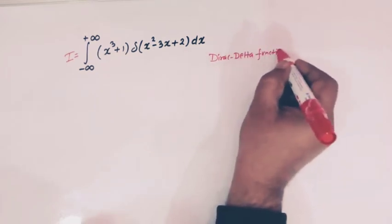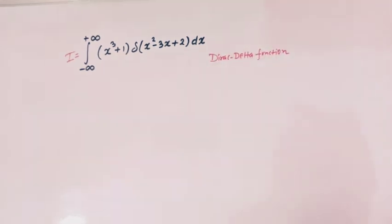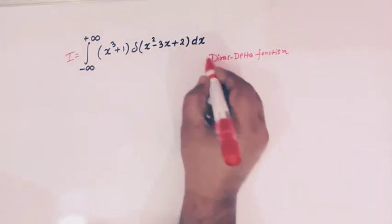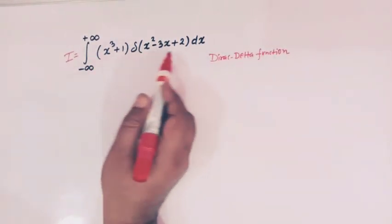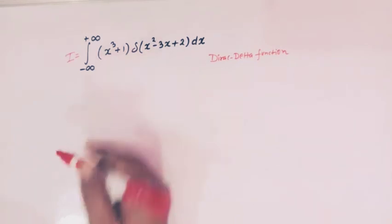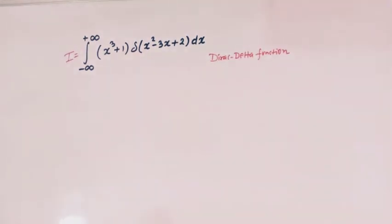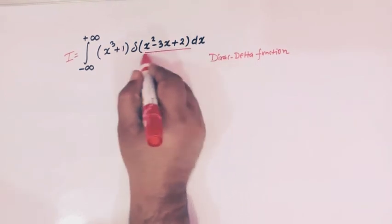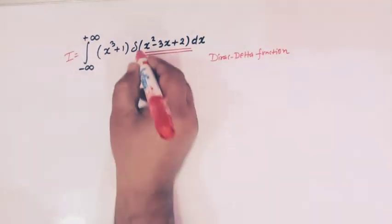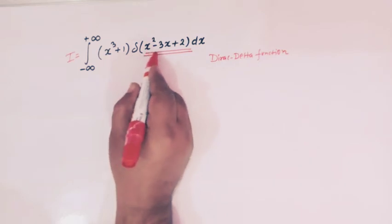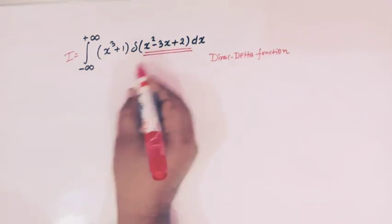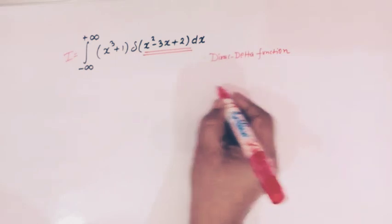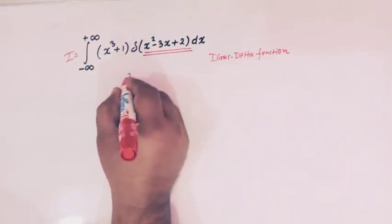Now in order to evaluate this integral, we have to make use of important properties of the Dirac delta function. So before applying the properties, let us first look at this expression. Here we have delta of x squared minus 3x plus 2, and let us first factorize this expression.